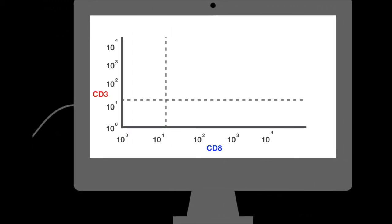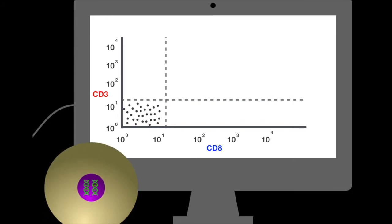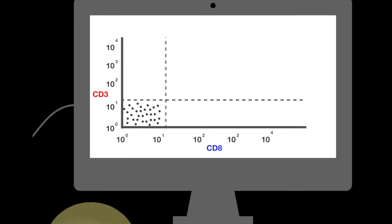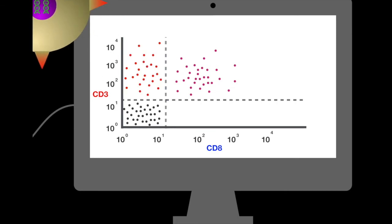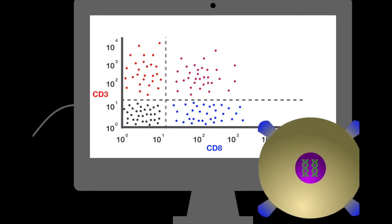The information is then plotted as a scatter plot. For example, in this plot, the lower left quadrant of these cells contain no CD8 or CD3. The upper right contains CD3 and CD8. Upper left contains just CD3, and lower right contains just CD8.